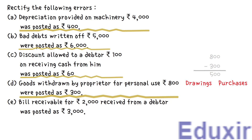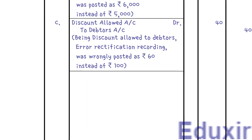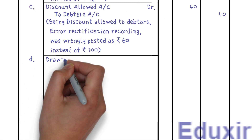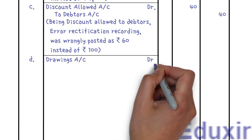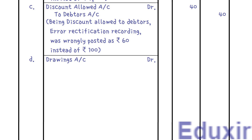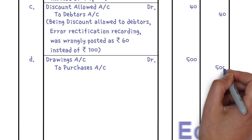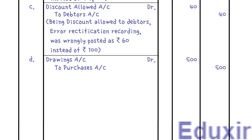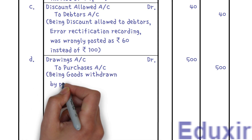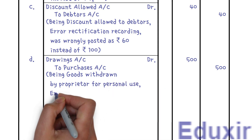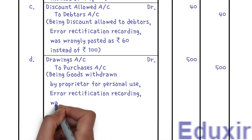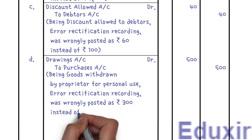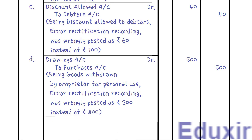With this analysis, let us proceed with journalizing these error rectification entries. We enter drawings account as the debit entry (Dr) with 500 rupees. The credit entry is purchases account with 500 rupees. The narration reads: being goods withdrawn by proprietor for personal use, error rectification recording — was wrongly posted as 300 rupees instead of 800 rupees.